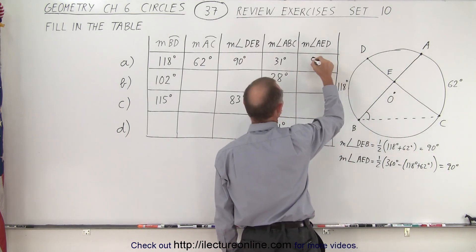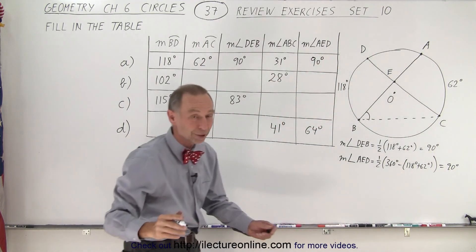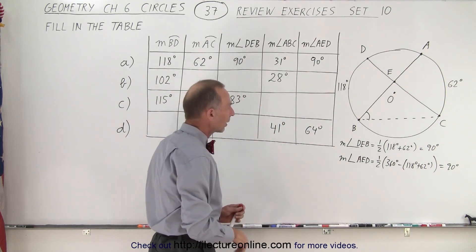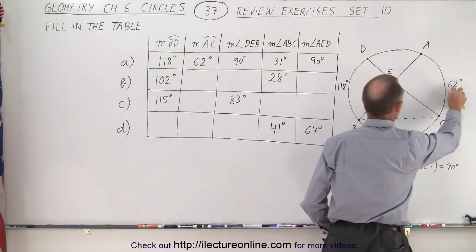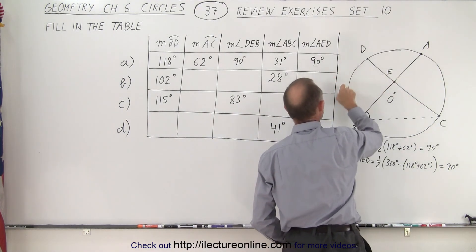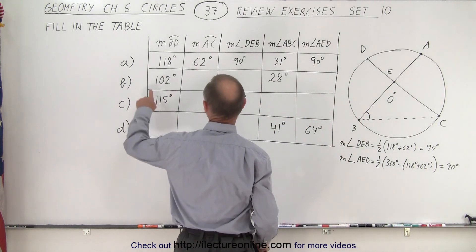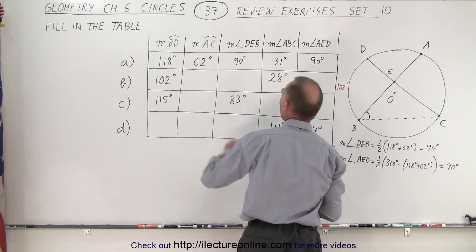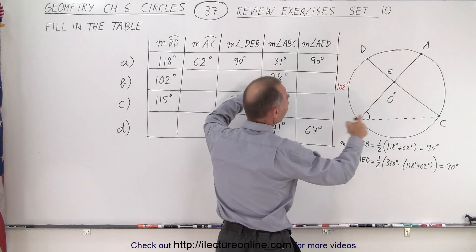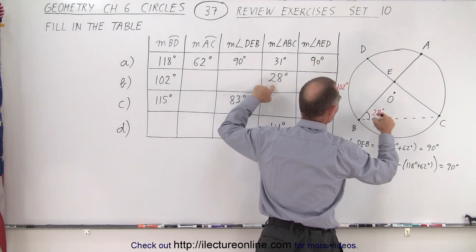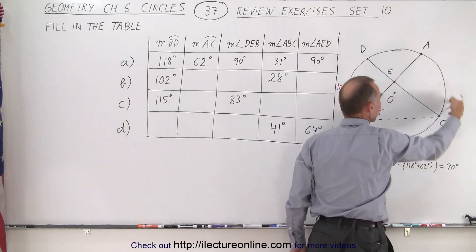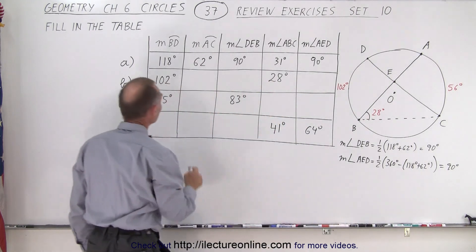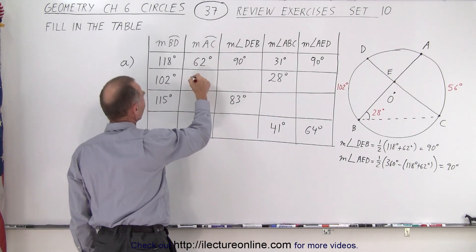That means this is also 90 degrees. For Part B, they give us new information — this angle is now 102 degrees and angle A-B-C is now 28 degrees. We know this angle must be half of the arc length, so that means the arc from A to C must be 56 degrees. That is one of the things they want to know — the measure from A to C is 56 degrees.